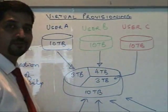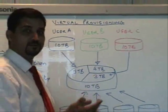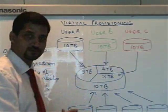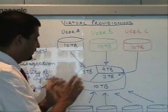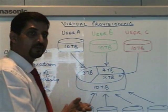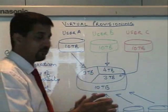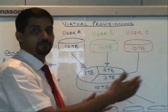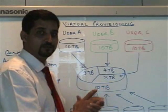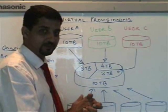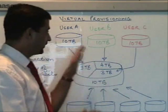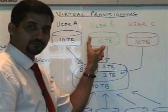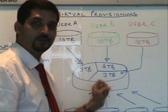The first step starts with classification and understanding your information. How much capacity is actually used by each of these servers or users? Hypothetically, it's a couple of terabytes that is used right now, but 10 terabytes is being asked because users anticipate that by the end of the year they'll be using up 10 terabytes of capacity. One challenge is: why do I provision 10 terabytes to each of them when they are currently using only 2 terabytes?